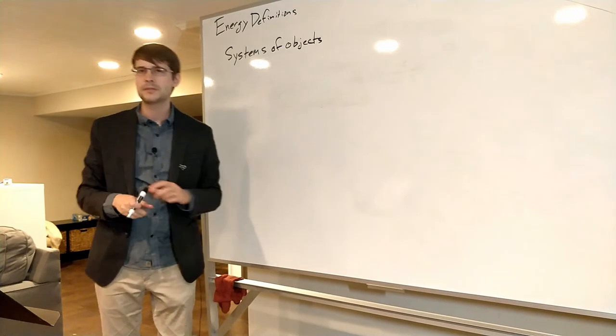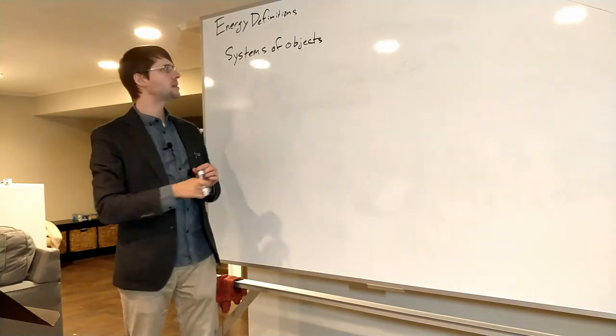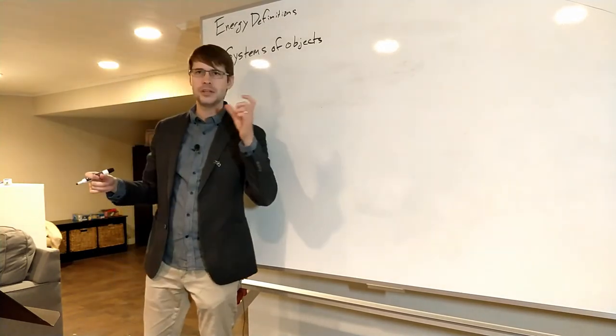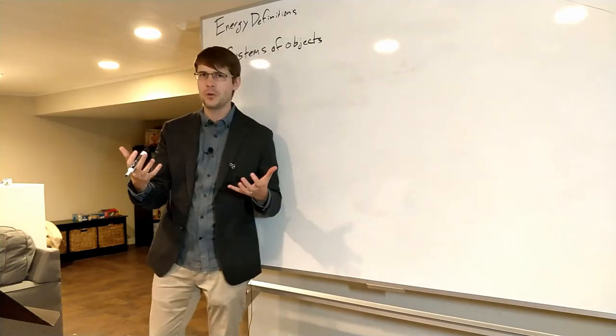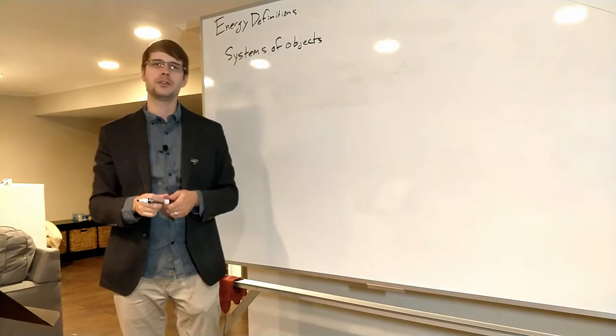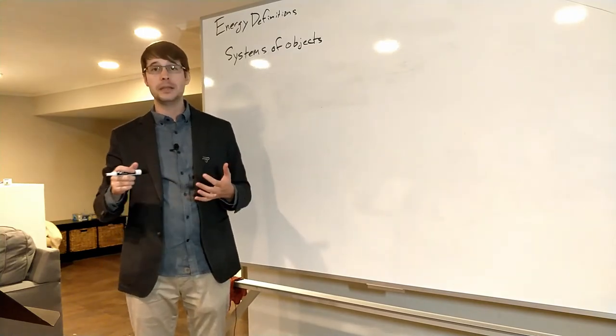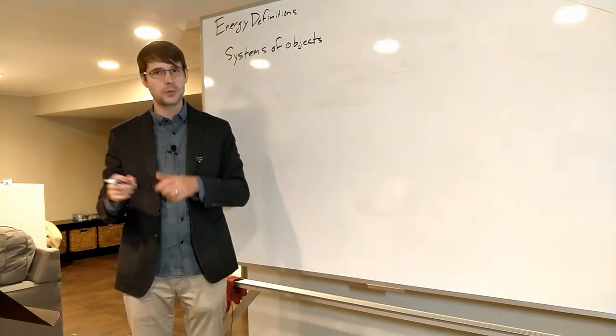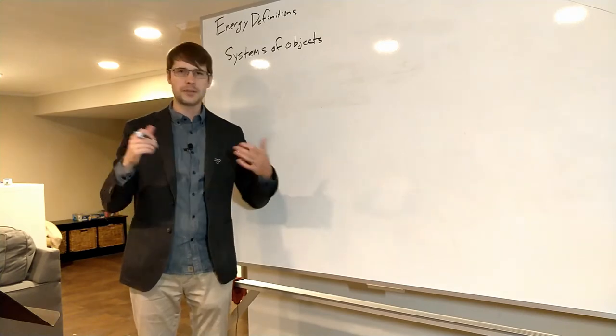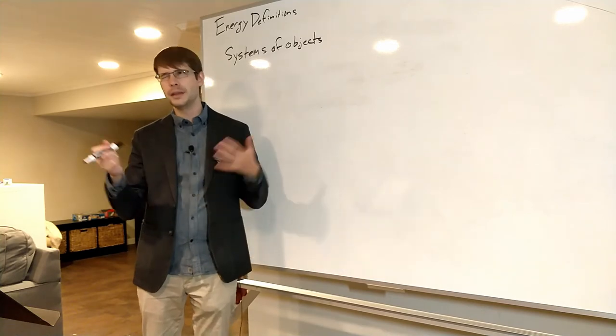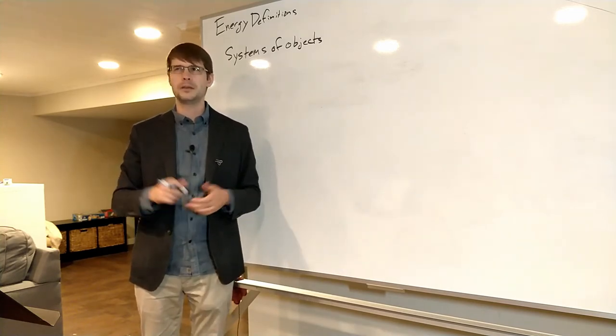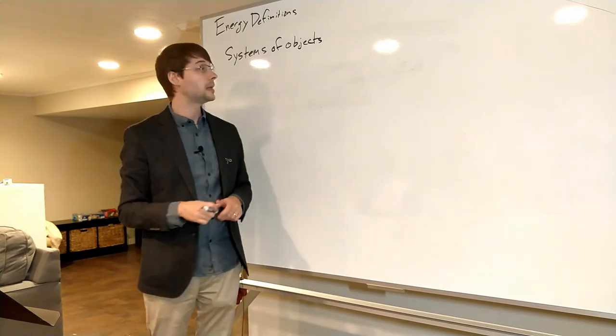That was for individual objects, but when we start to talk about systems of objects, not only does each individual object have kinetic energy, but the system as a whole can have potential energy. Potential energy has to do with the position and relative location of different objects. We have gravitational potential energy, spring potential energy, chemical potential energy as well.